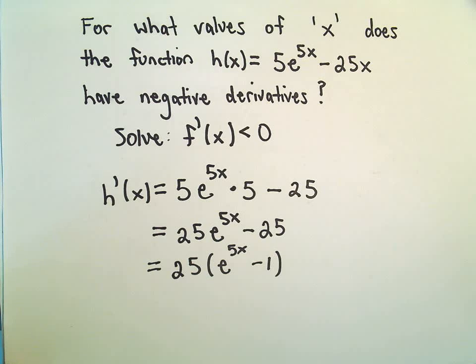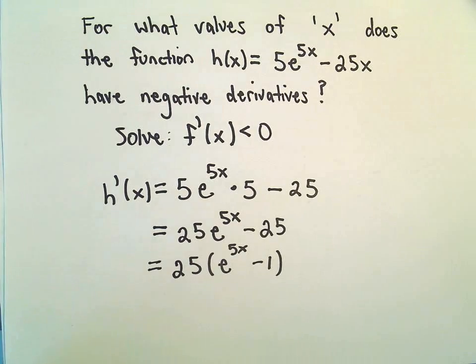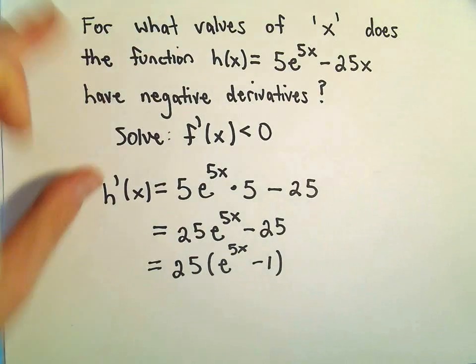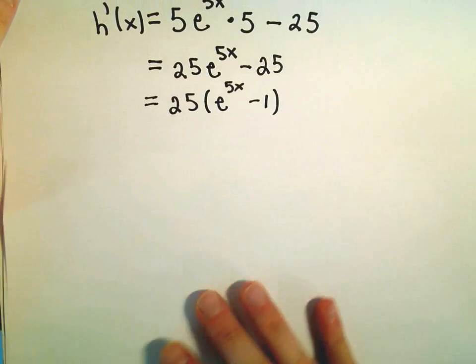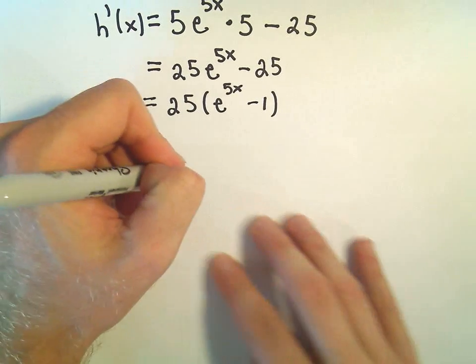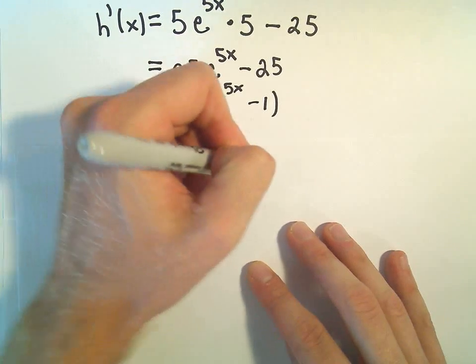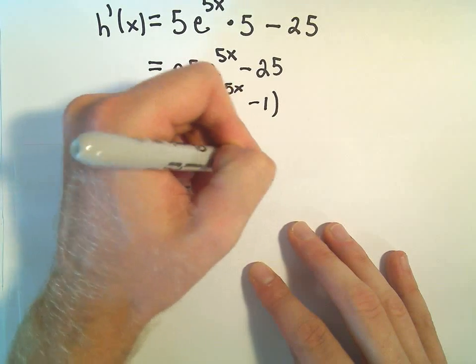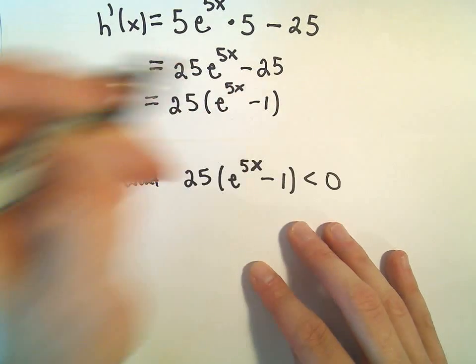Now we have to solve our inequality. I wrote f prime just because I'm so used to writing f prime. So we have to solve h prime less than 0. We want 25 times e to the 5x minus 1 to be less than 0.